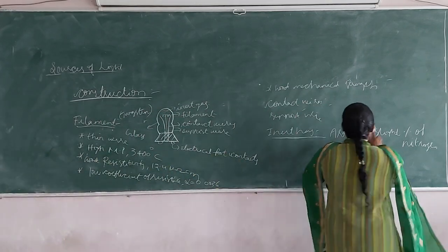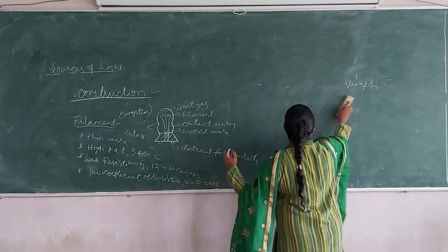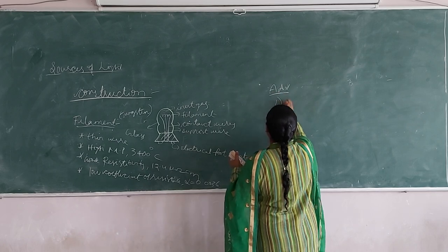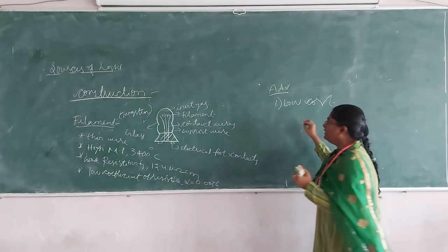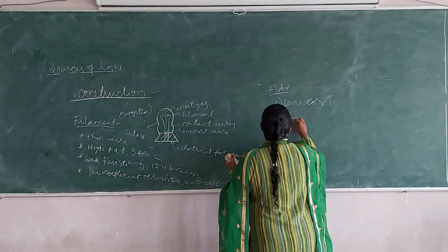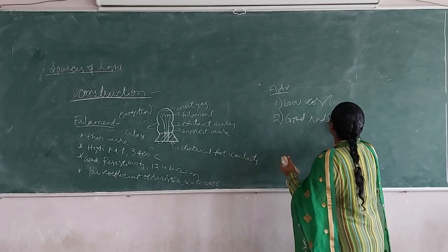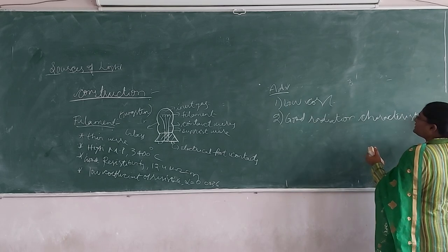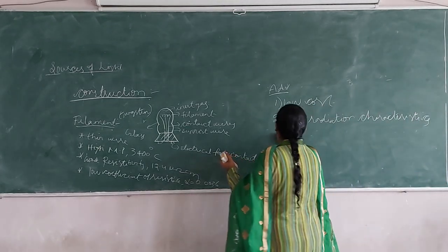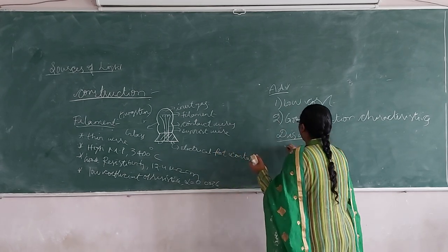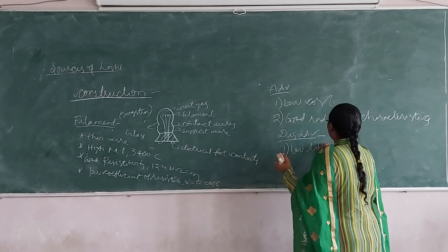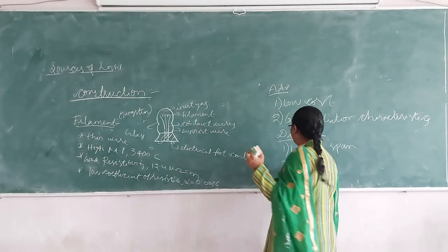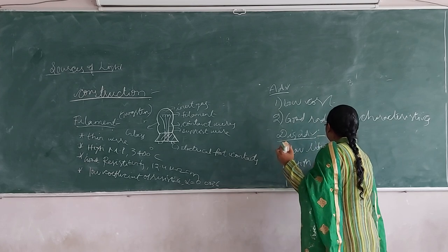Now let us see the advantages of the incandescent lamp. The first advantage is low cost. The second advantage is good radiation characteristics. And what are the disadvantages? Number one, low lifespan. Number two, high power consumption — it consumes a high amount of power.